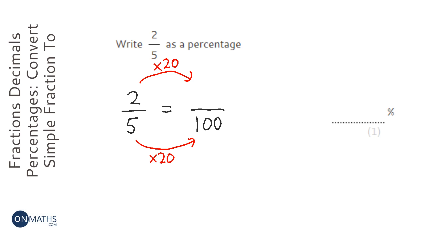So 2 times 20 is 40. That's saying it's 40 per 100, or 40%.